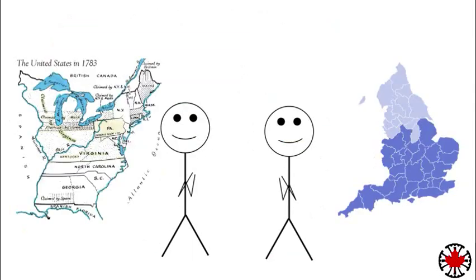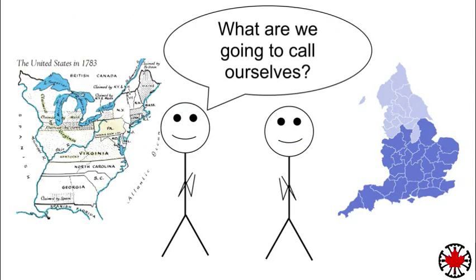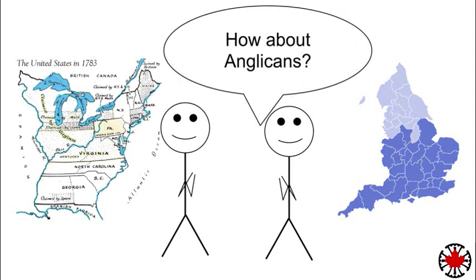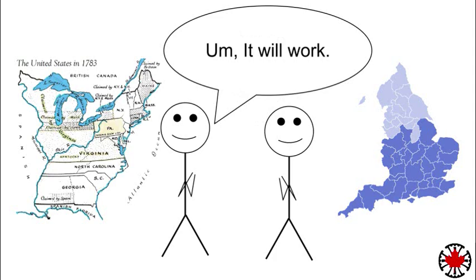Finally, at the beginning of the 19th century, someone thought it was a good idea to come up with an English word to describe the people that had a common doctrine that originated from the Church of England, or Ecclesiae Anglicana, as it was called in Latin. The word Anglican was derived from the Latin word Anglicana, and luckily, it stuck.